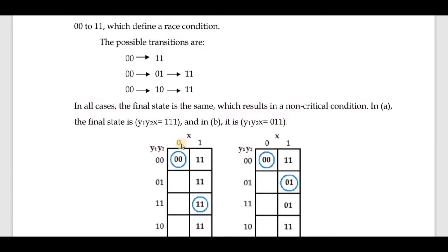Now consider another possible transition. Instead of x, suppose y2 is changing. Currently the state is 00 and y2 is changing from zero to one.